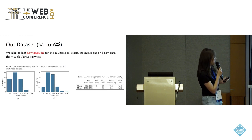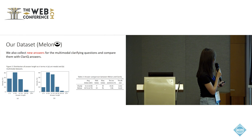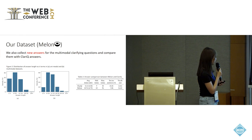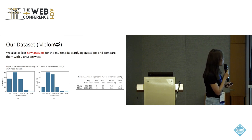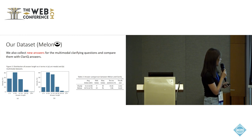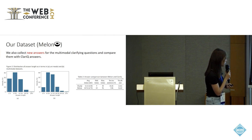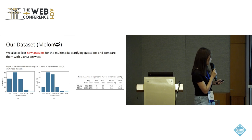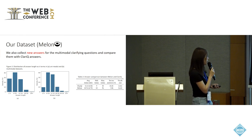We also collected new answers for the multimodal clarifying questions and compared them with ClaryQ text-only answers. This figure shows the distribution of answer lengths with respect to terms in a unimodal and a multimodal dataset. Compared to text-only clarifying questions, we observe answers with longer lengths in the multimodal scenario. This table shows the answer comparison between Melon and ClaryQ. When presented with multimodal clarifying questions, we observe a lower percentage of simple yes-or-no answers and a larger vocabulary, showing that users can actually provide more comprehensive and informative answers.